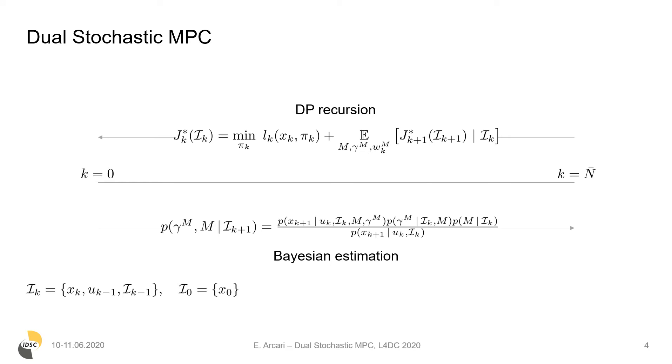While this provides the exact solution to the dual control problem, dynamic programming is generally intractable. So for this reason we provide an approximate reformulation.